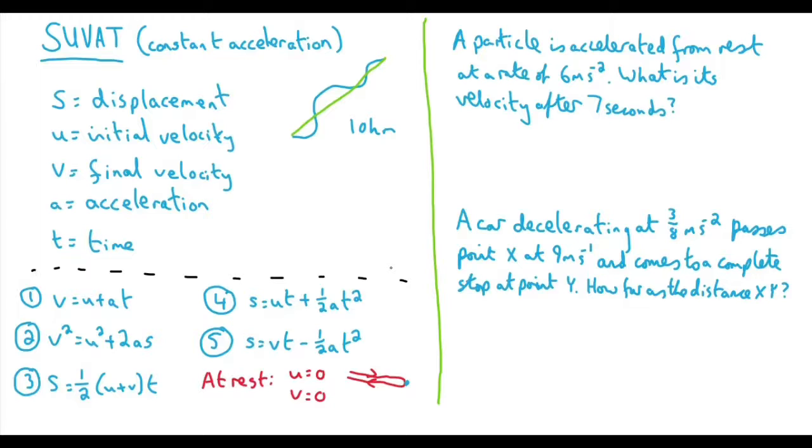With all this in mind, let's just see now how we could apply these equations to a question. Up here, we're told a particle is accelerated from rest at a rate of six metres per second squared. What is its velocity after seven seconds? Now, looking here, it may seem that we are given only two numbers to work with. We're told that the acceleration is six and that time is seven.